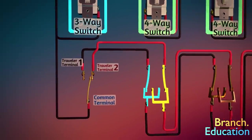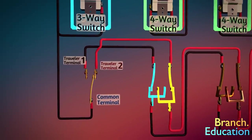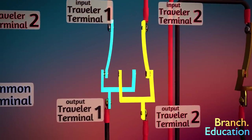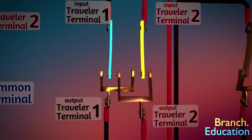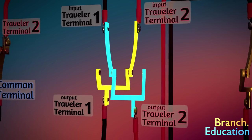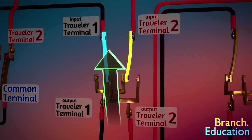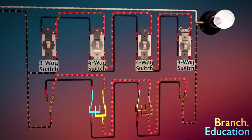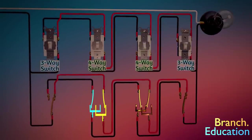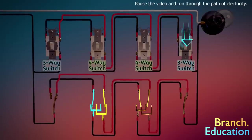Instead of a common and two travelers as we saw it in the three-way switch, four-way switches use two sets of two travelers. When the toggle is flipped, the two pairs of travelers on the left change to being connected to the opposite traveler on the right. Here's a brief animation showing how the path of electricity is closed or opened and the light turns on or off depending on the position of each switch.